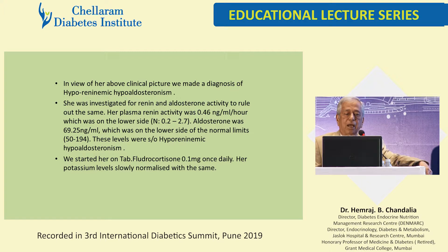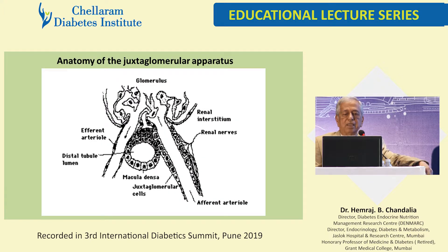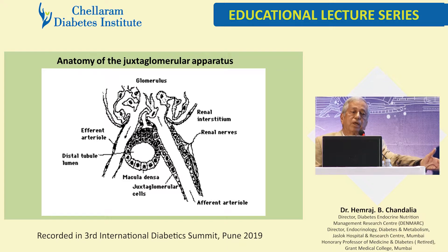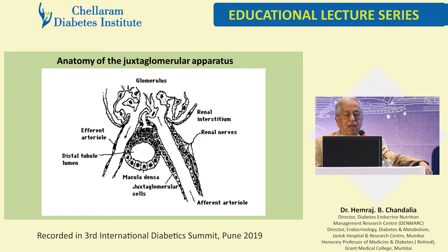Fludrocortisone in small doses controlled the hyperkalemia very well. The mechanism involves the juxtaglomerular apparatus from which renin is secreted, dependent on macula densa cells, tubular flow, efferent vessels, and blood volume. In diabetics, many of these factors are adverse, leading to hyporeninemia, which causes hypoaldosteronism — because renin must be converted via angiotensin I and angiotensin II to stimulate aldosterone secretion. This is an interesting condition in diabetics that you should be familiar with.